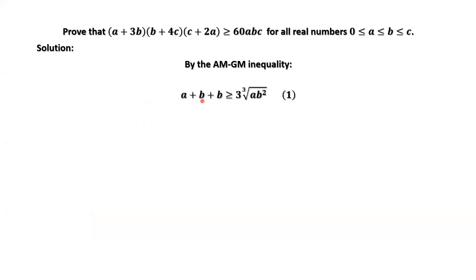a + b + b is greater than or equal to 3 times the third root of ab², which is b squared. Similarly, we have b + c + c is greater than or equal to 3 times the third root of bc². And c + a + a is greater than or equal to 3 times the third root of ca².